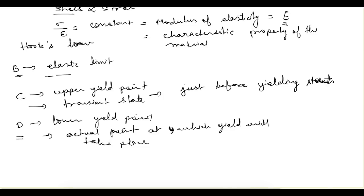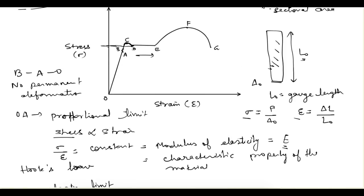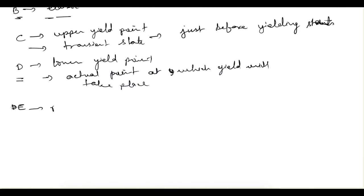After point D, we have zone DE. Here the strain is increasing at a rapid rate compared to the stress. This is the plastic zone for mild steel because it is a ductile material — the rate of strain is very high.